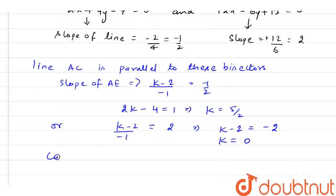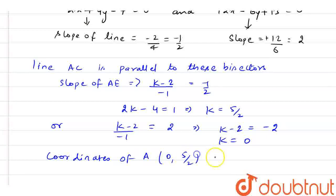So the coordinates of A will be (0, 5/2) or (0, 0).